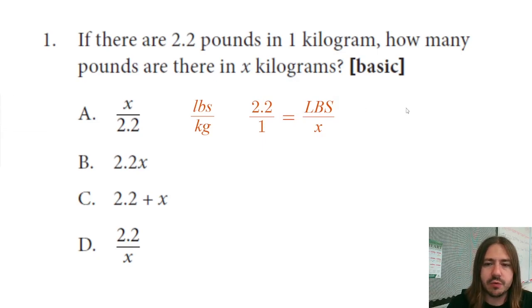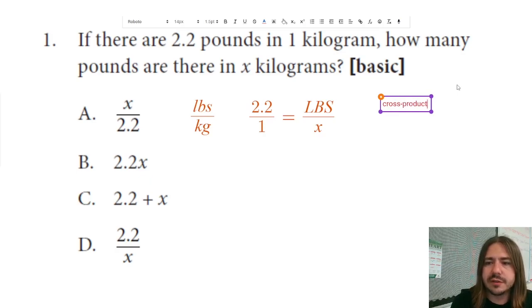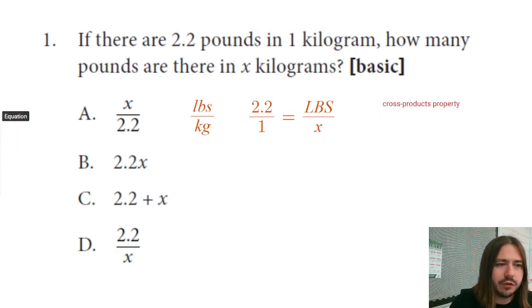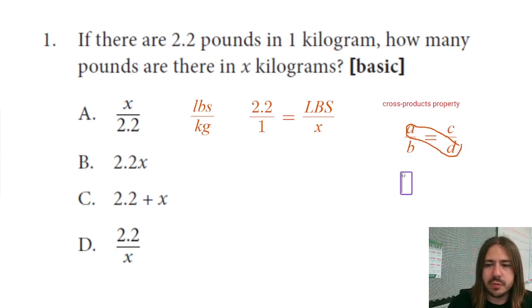Now we can use something called the cross products property. Let me just break that down for you. Cross products property. Sometimes it's known as cross multiplication. But basically what it says is if you've got a proportion and you've got two equal ratios, like a over b and say c over d, you can rewrite this by multiplying a times d. So multiply the numerator of one fraction by the denominator of the other. And that will be equal to the product of the other numerator times the other denominator. So we have ad times, I'm sorry, equals cb, right? And so that's kind of what we're going to do here.